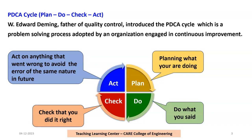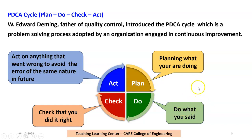So what is Plan? Whatever role we are playing, we plan what we are going to do. Then we Do — we execute as per our plan. Then we Check whether we did it right — whether we executed the work as per the plan. Then we Act on anything that went wrong, to avoid errors of the same nature in the future. This is the basic concept of Plan, Do, Check, Act. Now how is PDCA going to be useful for classroom teaching?